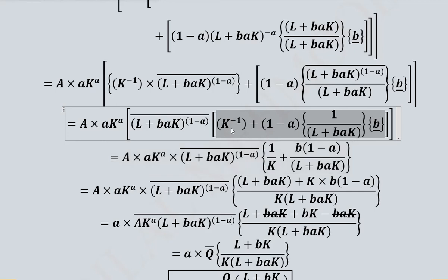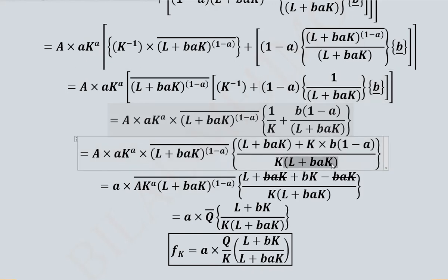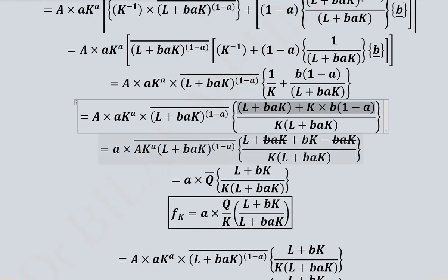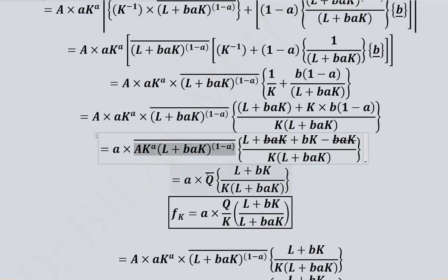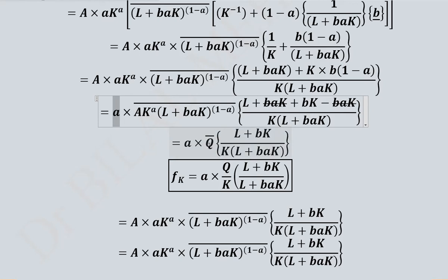We write K raised to the minus 1 as 1 over K and combine terms. Taking the LCM and simplifying the numerator, cancellation occurs and we are left with a simplified expression. We then bring together the required terms to form 1 minus A in the power, with A and K raised to power A, which equals Q. The final simplified result for FK also contains Q, making subsequent cancellation straightforward.